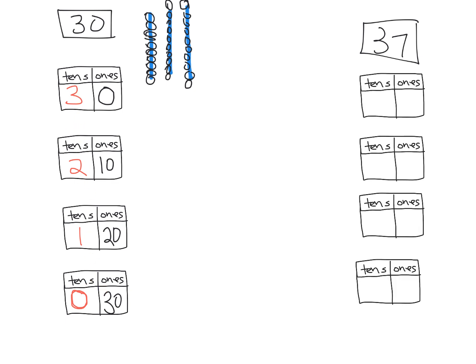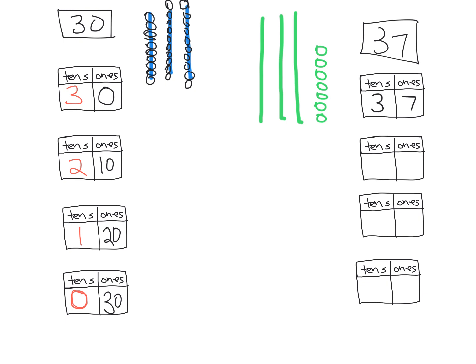We could repeat that process with 37. Let's do it in green. The first thing I'm going to do is model 37 — ten, twenty, thirty — and then seven individual little units. So there is my 37. So what do I have? I have three tens and seven ones.